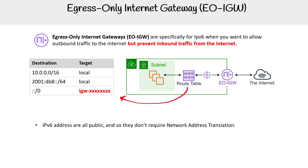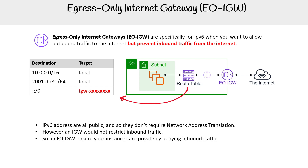IPv6 addresses are all public, so they don't require network address translation. However, a regular IGW would not restrict the inbound traffic. So the EO-IGW will ensure your instances are private by denying inbound traffic. And it's as simple as that.